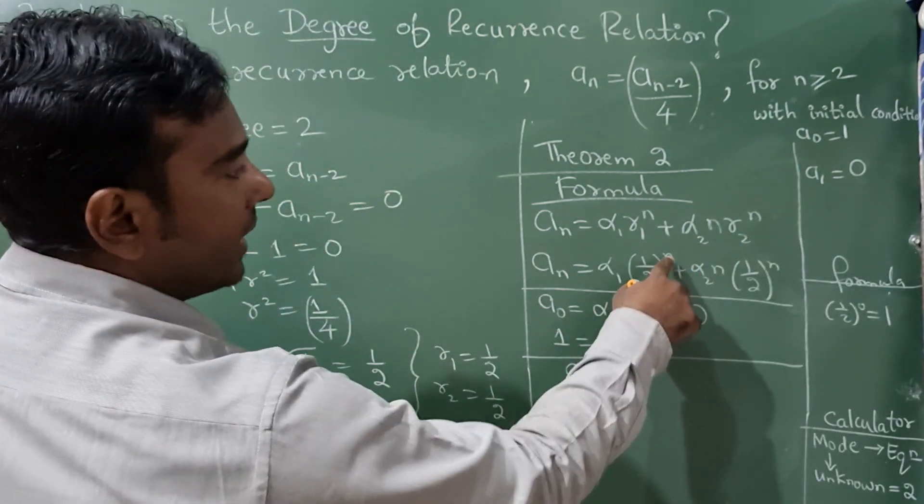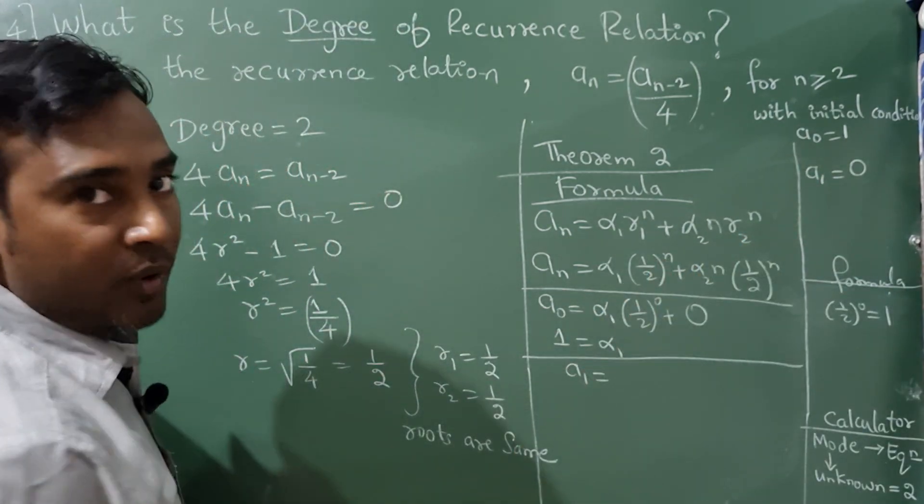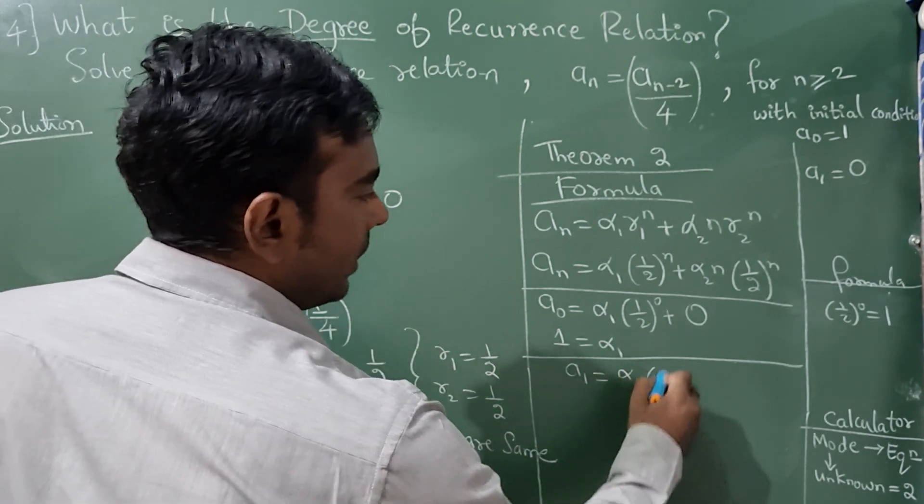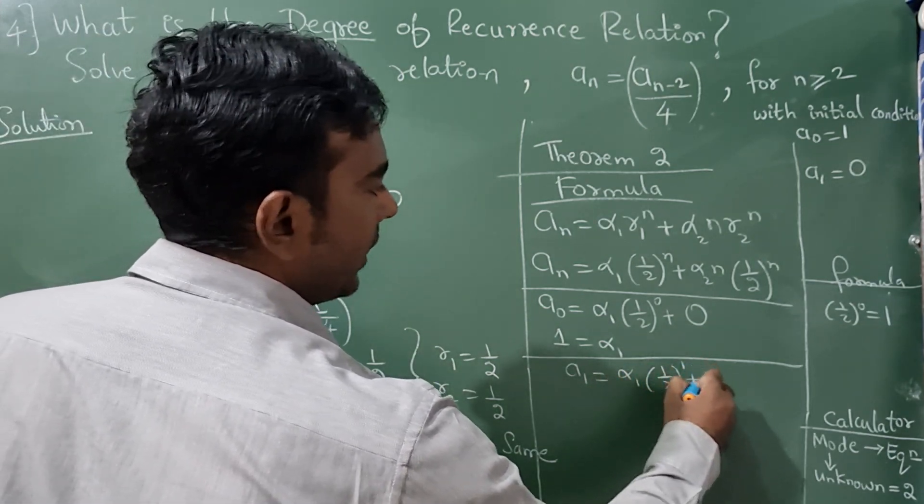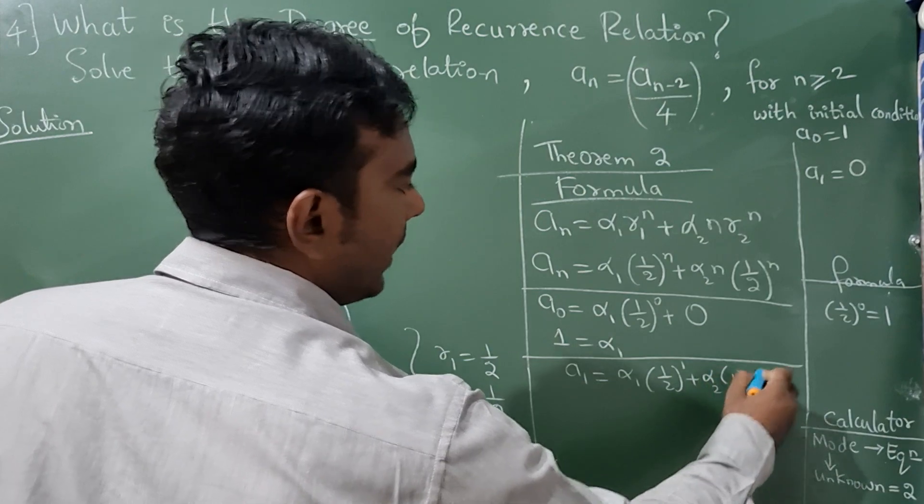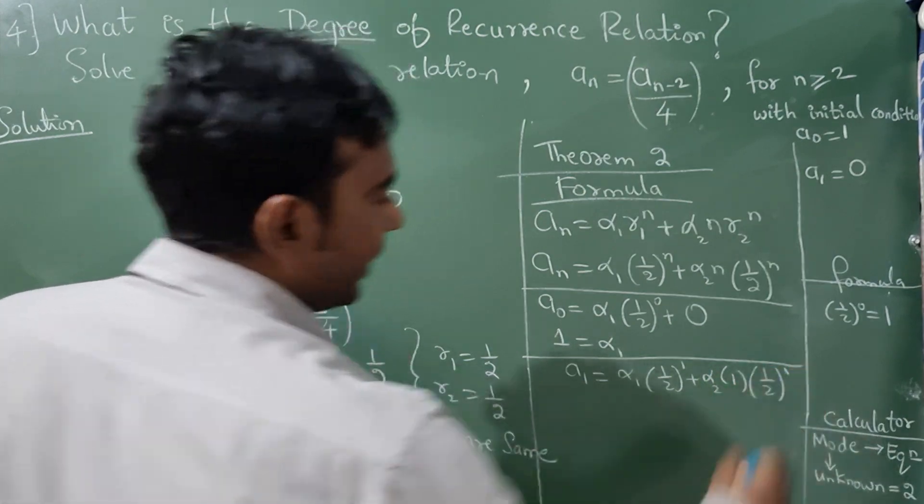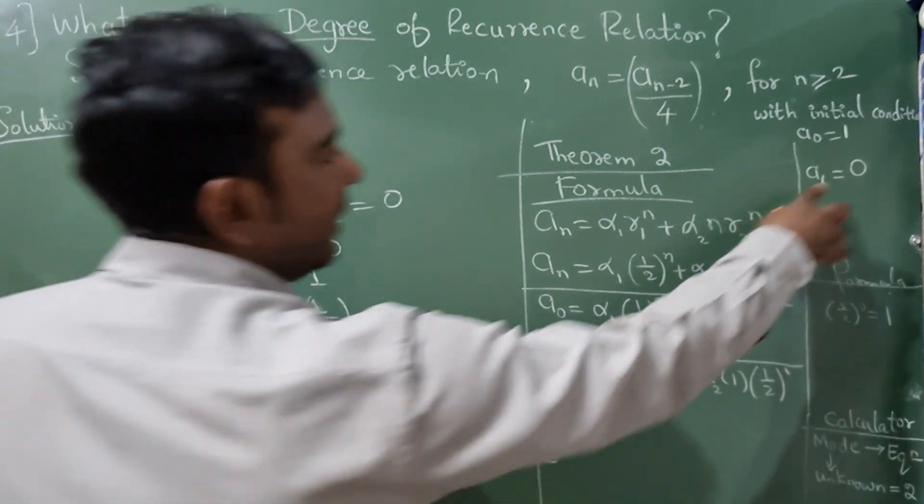Next initial condition is a_1. Where there is a_n substitute 1: α₁(1/2)¹ + α₂·1·(1/2)¹. Now what is the value of a_1? It is 0.